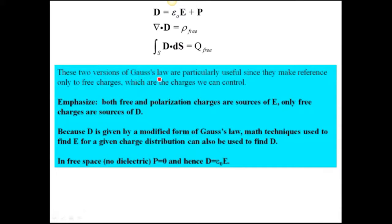Here they are again. The definition of D, the Gauss's law differential form, and Gauss's law integral form. Notice in this equation there is no epsilon zeros. So these are two versions of Gauss's law and they're particularly useful since they make reference only to free charges.